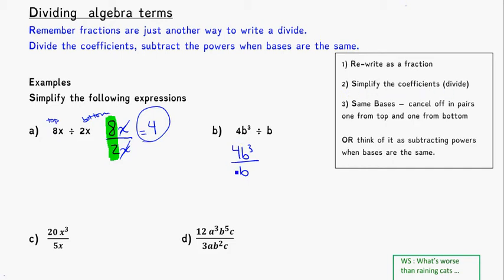So I could think that there's an invisible 1. But what's 4 divided by 1? It's just going to be 4 again.